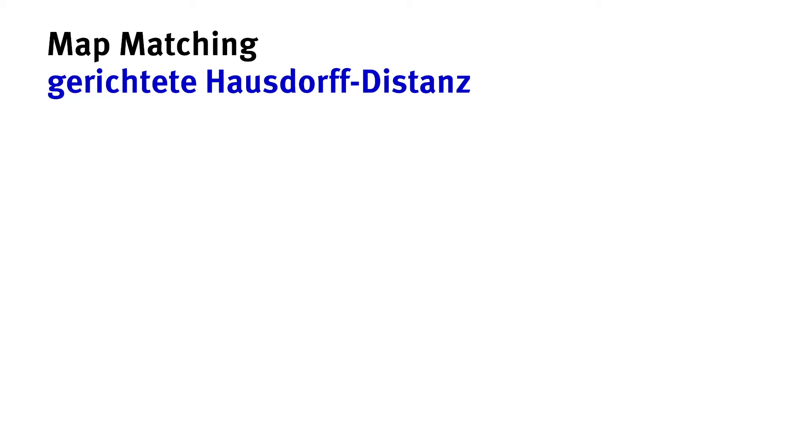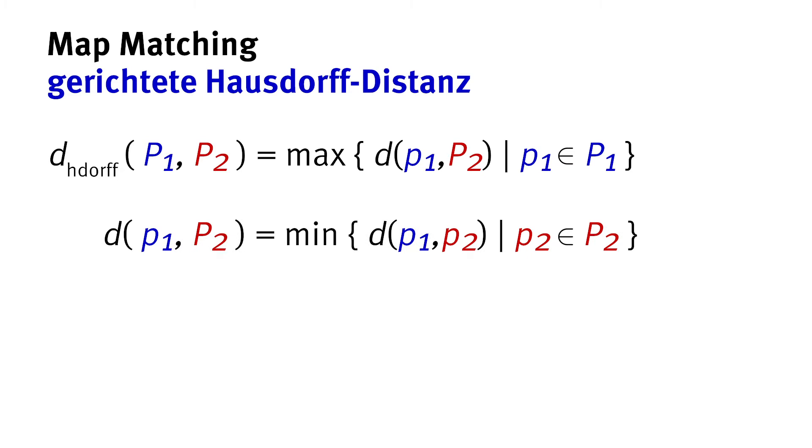By its definition, this maximum over this minimum, it establishes a correspondence between points on the one polyline and points on the other. But this correspondence turns out to be a little bit weird in our application. Let's have a look.